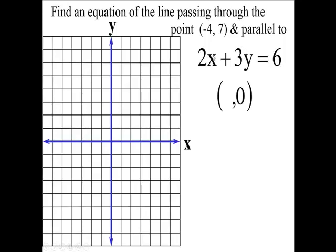2 times what is 6? 2 times 3 is 6. So when y is 0, x must be 3. That's one point, and that's right here. That's called the x-intercept. 3 to the right, and you're right on the x-axis. That's (3, 0).